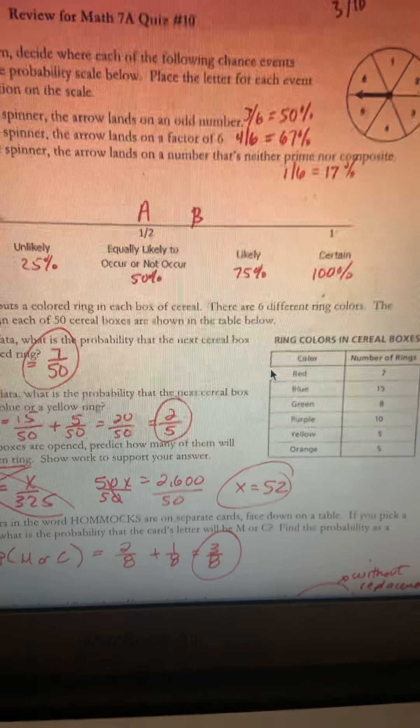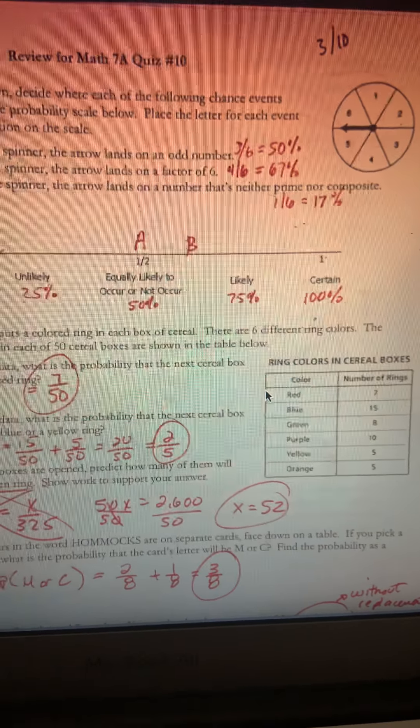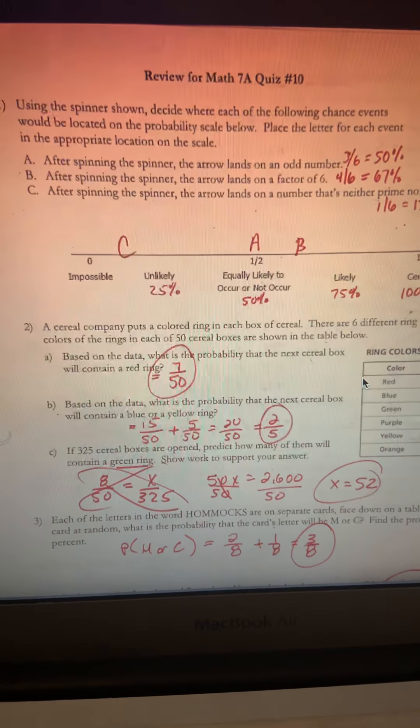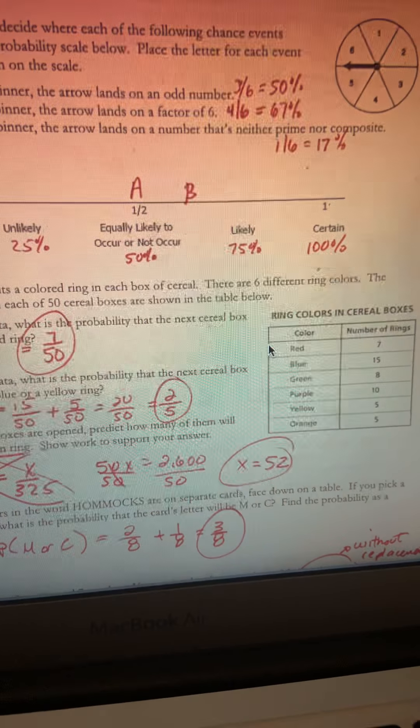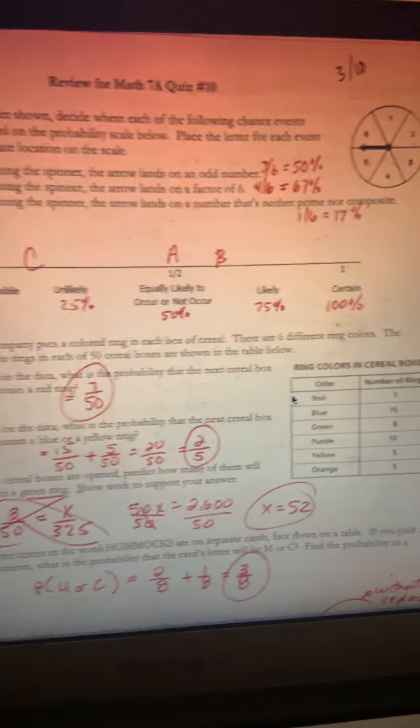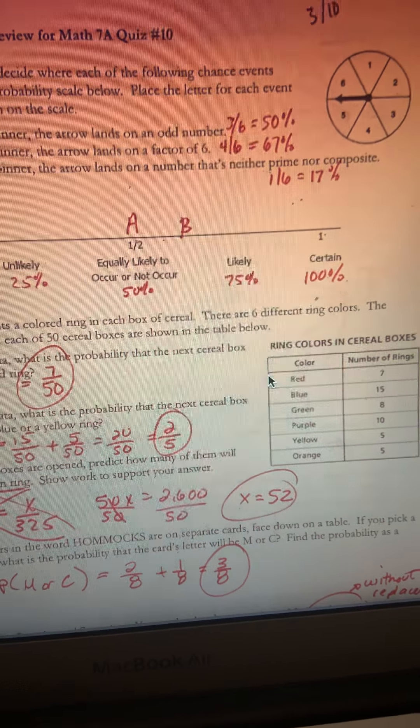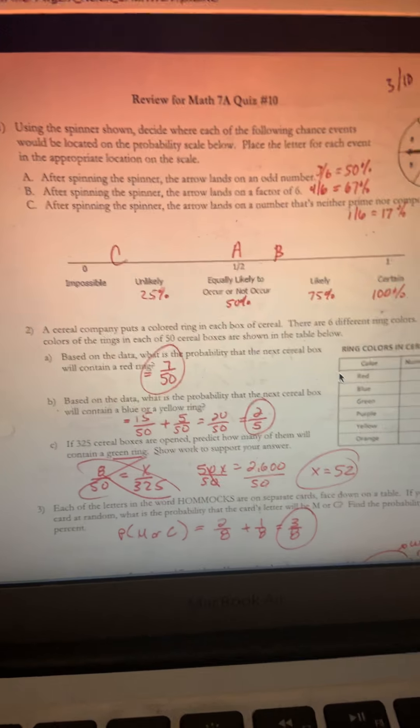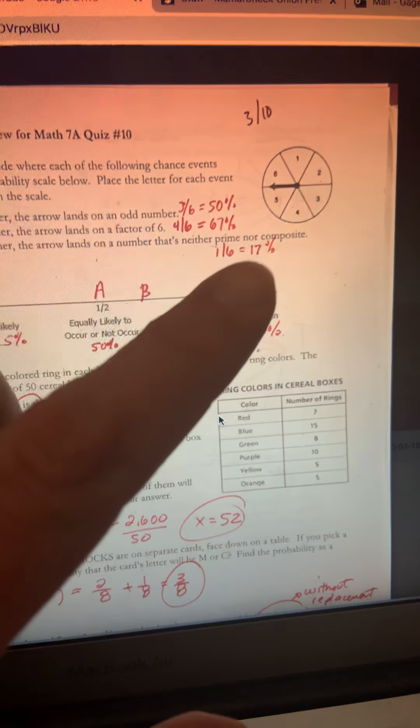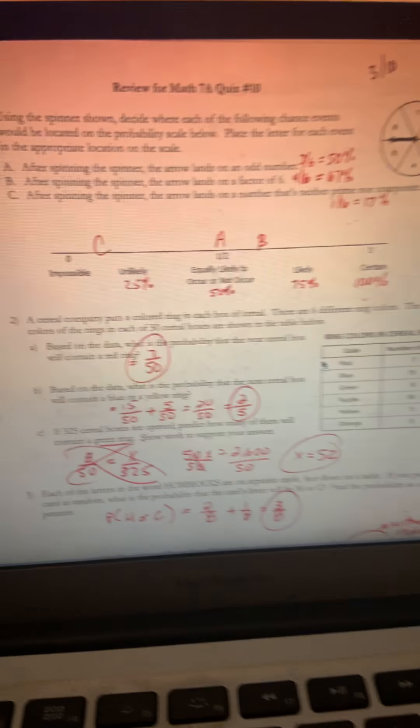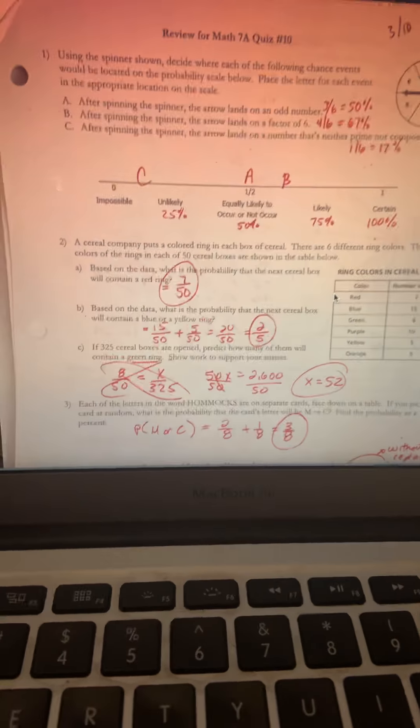Basically, when you found each percent, you place the corresponding letter on the number line. Letter A goes to 50 percent, letter B goes between 50 and 75 since it's 67, and letter C goes between 0 and 25 because it's 17. This brings us to example number two.